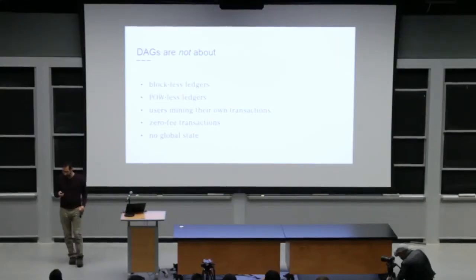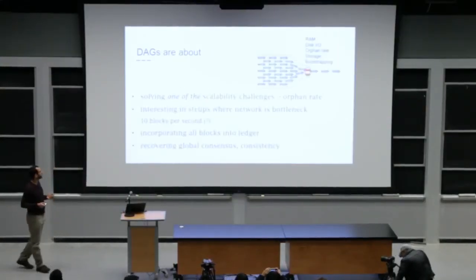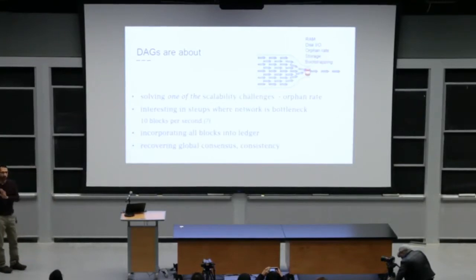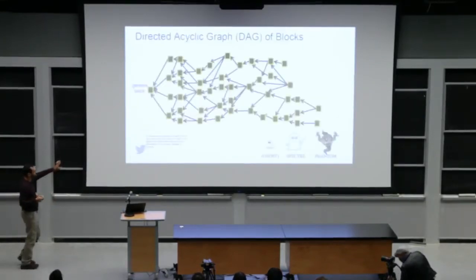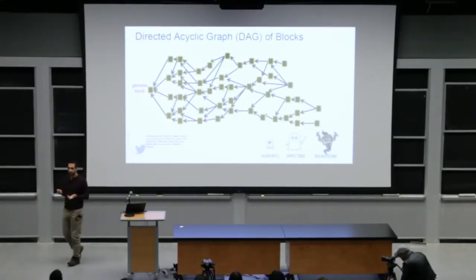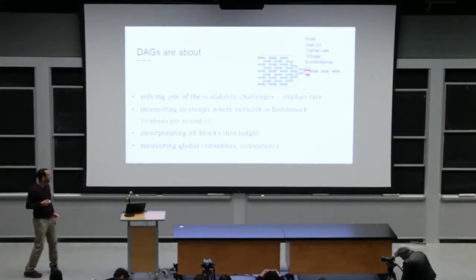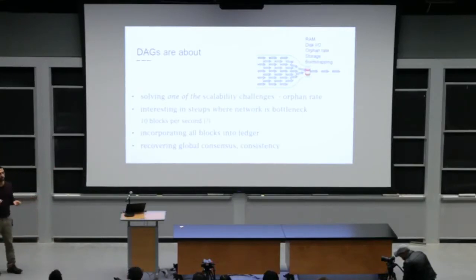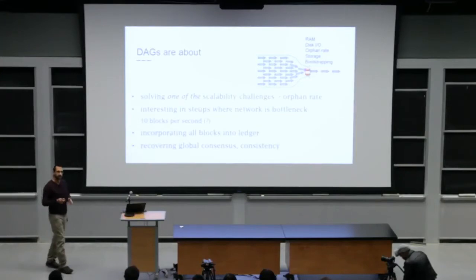Okay. In truth, dads are about something else. It's just a data structure, merely a data structure, a generalization of Satoshi's chain. And the reason we're using these data structures is to solve the skill, one of the scalability challenges, namely the orphan rate problem.